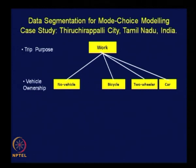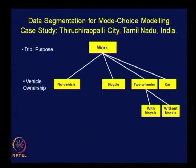Now we have come to two levels of segmentation — one based on trip purpose, and one based on economic characteristics of travelers. Then we must look into the aspect of the choice set being the same for different categories of travelers. Two-wheeler-owning households may or may not also own a bicycle. When they own a bicycle, the number of alternatives will be different from when they do not — one alternative less. So that should be taken into account.